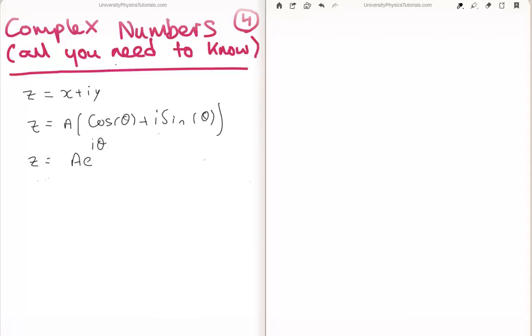So a quick recap, we found in the previous videos that the complex number can be written as x plus i times y or a times cos theta plus i times sin theta. And finally using Euler's equation we can write it as a times e to the i theta.